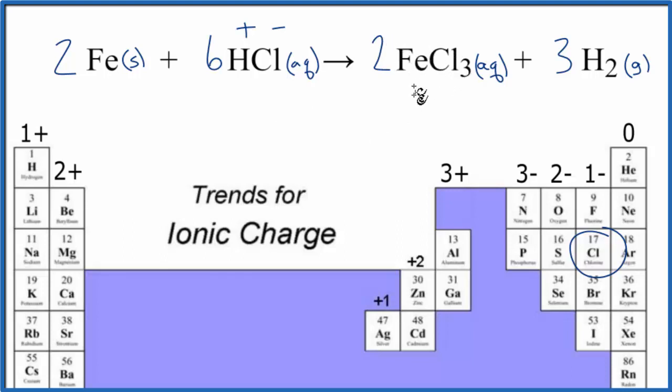We don't know its charge, but remember the chlorine we said is minus. So three times the one minus, that's three minus. So this has to be three plus for these charges to balance out. And then hydrogen, we're just going to leave alone because it's a gas.